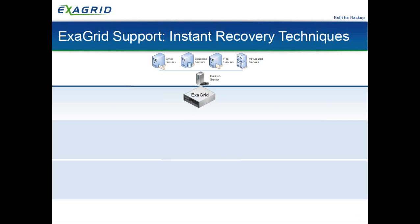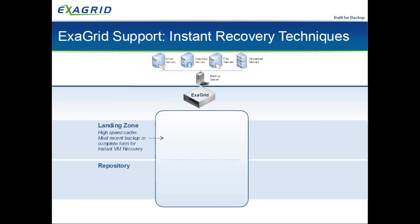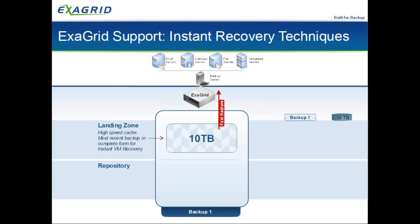Let's look in more detail at what goes on behind the covers. The same workloads — email server, database server, file server, virtualized environment — go through a backup server and land on the ExaGrid. ExaGrid has two areas: the landing zone, which is the disk backup, and the repository where we keep deduplicated data. When a backup comes in — say a 10 TB backup — it lands on disk just like any disk staging. Backup is done. Now we own the data and behind the scenes we go through the deduplication process.